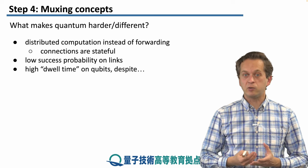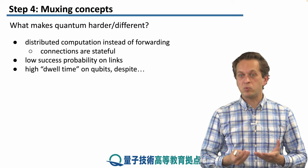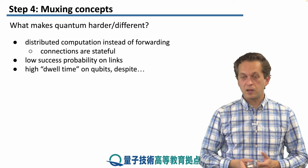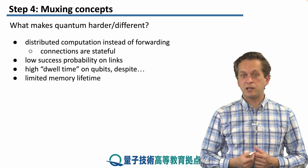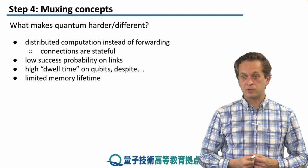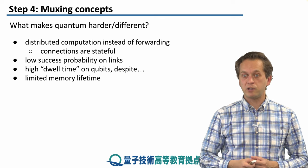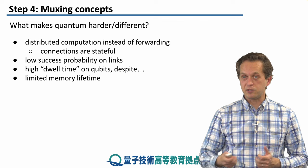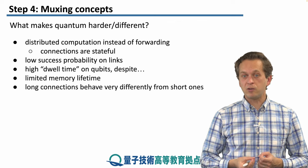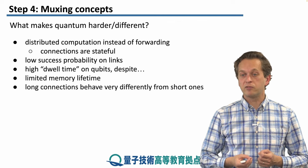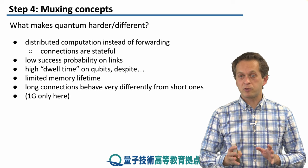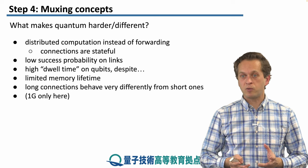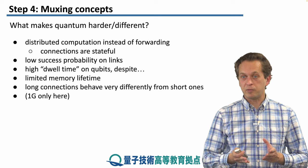Also, we have to deal with high dwell times on qubits. Dwell time means that the qubit is reserved, or locked — it's part of some connection. And we have to do this despite the fact that we are dealing with very limited memory lifetimes. The qubits themselves decohere very quickly, yet we have to reserve them in order to send and receive classical messages. This means that long connections behave very differently from short ones. All of these problems relate to 1G repeater networks only, which is mostly what we will talk about in this module.